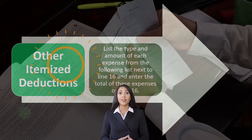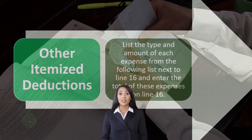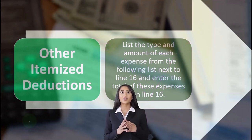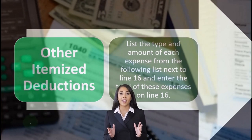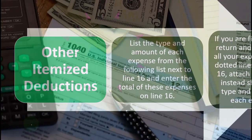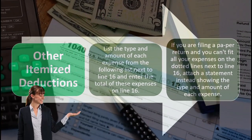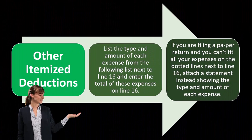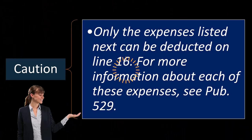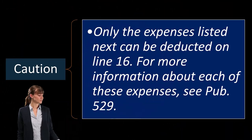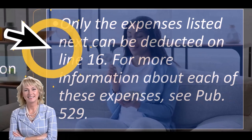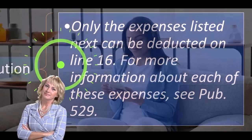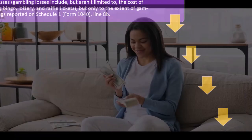Other itemized deductions: list the type and amount of each expense from the following list next to line 16 and enter the total of these expenses. The form itself just says 'other itemized deductions,' so you'd have to list what it is you're including. If you are filing a paper return and can't fit all your expenses on the dotted lines next to line 16, attach a statement showing the type and amount of each expense. For more information about each of these expenses, see Publication 529 on the IRS website.